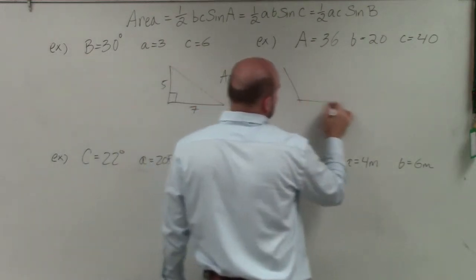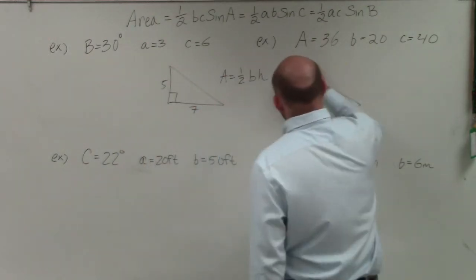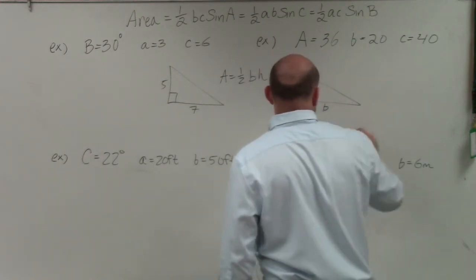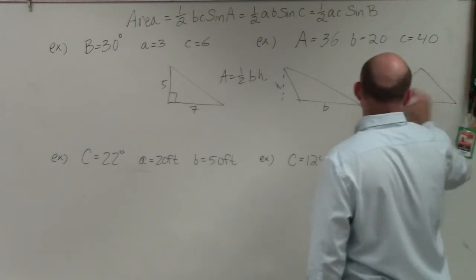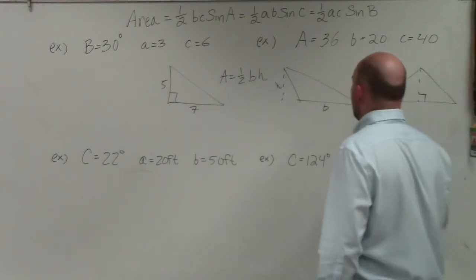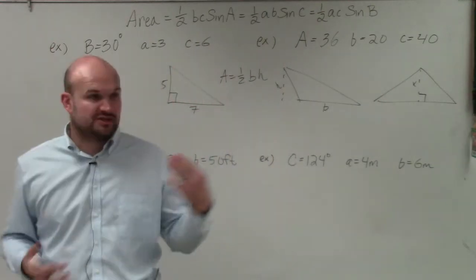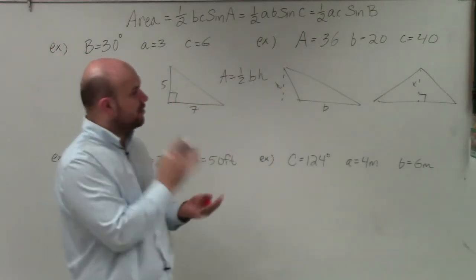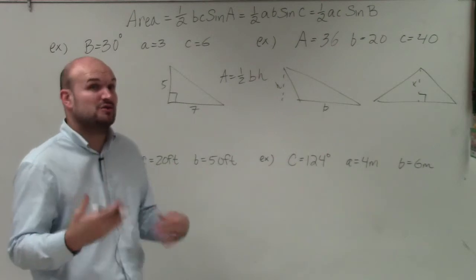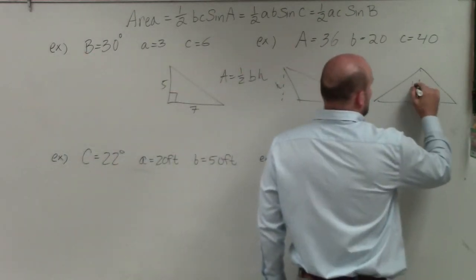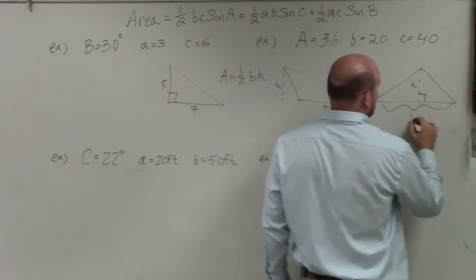Then we started looking at some different oblique triangles, but maybe we would give you what the height was, as well as what the base was. And so it didn't always have to be right triangles, but you were always given these values. Or we were able to use trigonometry, special right triangles, or other properties of triangles to be able to identify and determine what exactly the height was, as well as what the length of the base was.